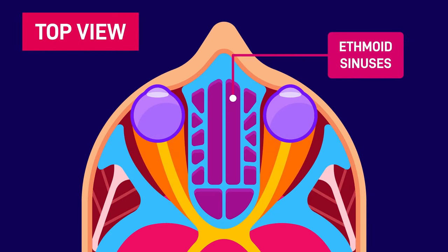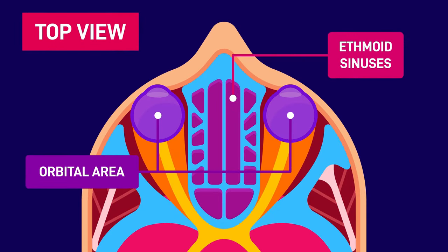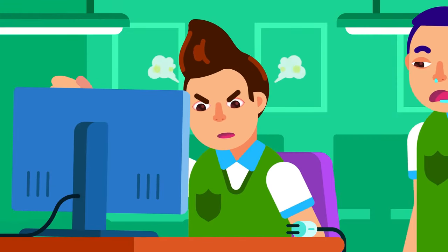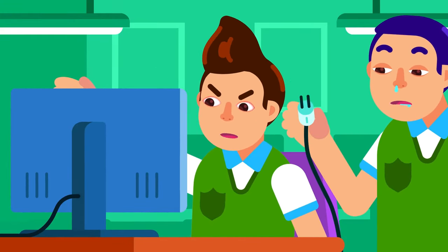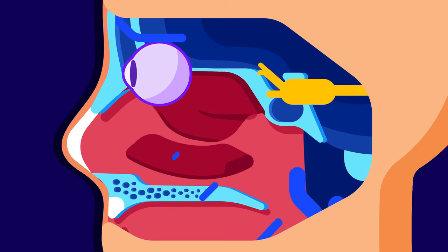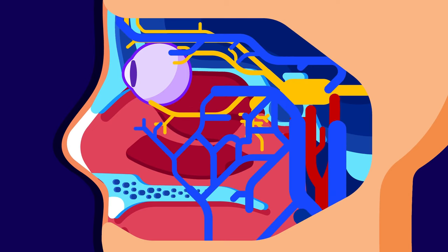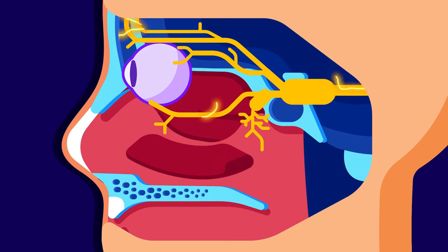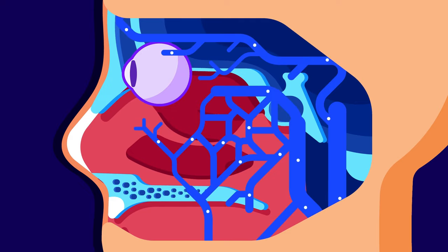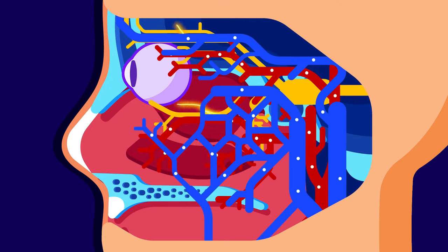The ethmoid sinuses and the orbit area are separated only by a thin bone, so infection can spread here. Similar to how computers need an internet connection and a power source to work properly, the sinuses need networks of nerves and blood vessels to connect to the central nervous system, supply oxygen for respiration and energy, and to remove waste. We will walk through them in the next video.